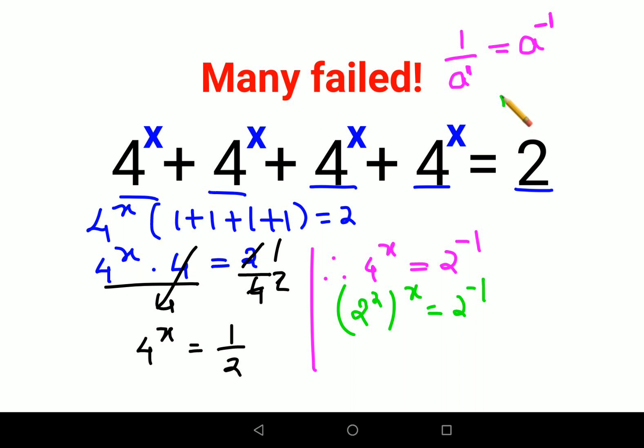There is another rule in indices: a raised to m, the whole raised to n, is nothing but a raised to m into n. So using that, I can say 2 raised to 2x equals to 2 raised to minus 1.